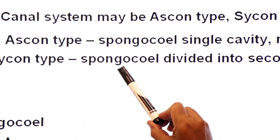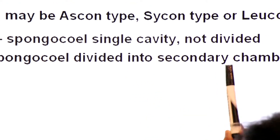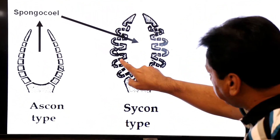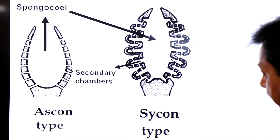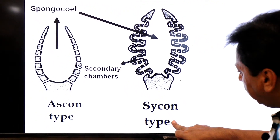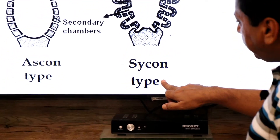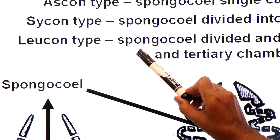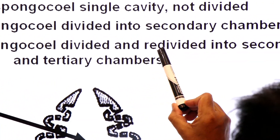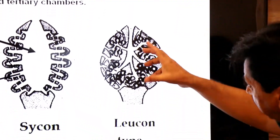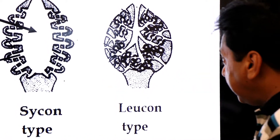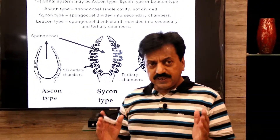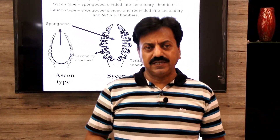When the spongocoel is divided into secondary chambers, the canal system is called the sycon type. The leucon type is the most complicated canal system, in which the spongocoel is divided and re-divided into secondary and tertiary chambers.